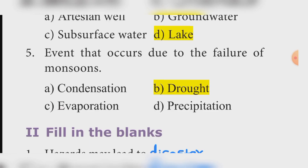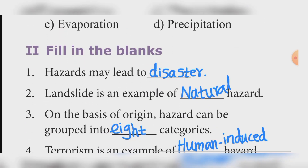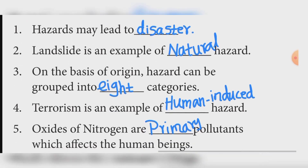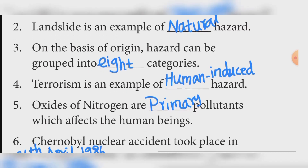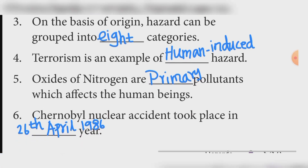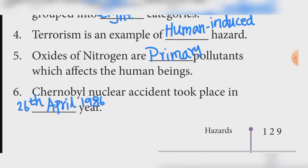Fill in the blanks. First: Hazards may lead to disaster. Second: Landslide is an example of natural hazard. Third: On the basis of origin, hazards can be grouped into eight categories. Fourth: Terrorism is an example of human-induced hazard. Fifth: Oxides of nitrogen are primary pollutants which affect human beings. Sixth: Chernobyl nuclear accident took place on April 26, 1986.